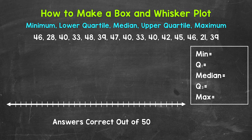So those numbers at the top of the screen — let's say that we have 15 people in a class and they had a test that had 50 questions. These are the results as far as answers correct out of the 50 questions.